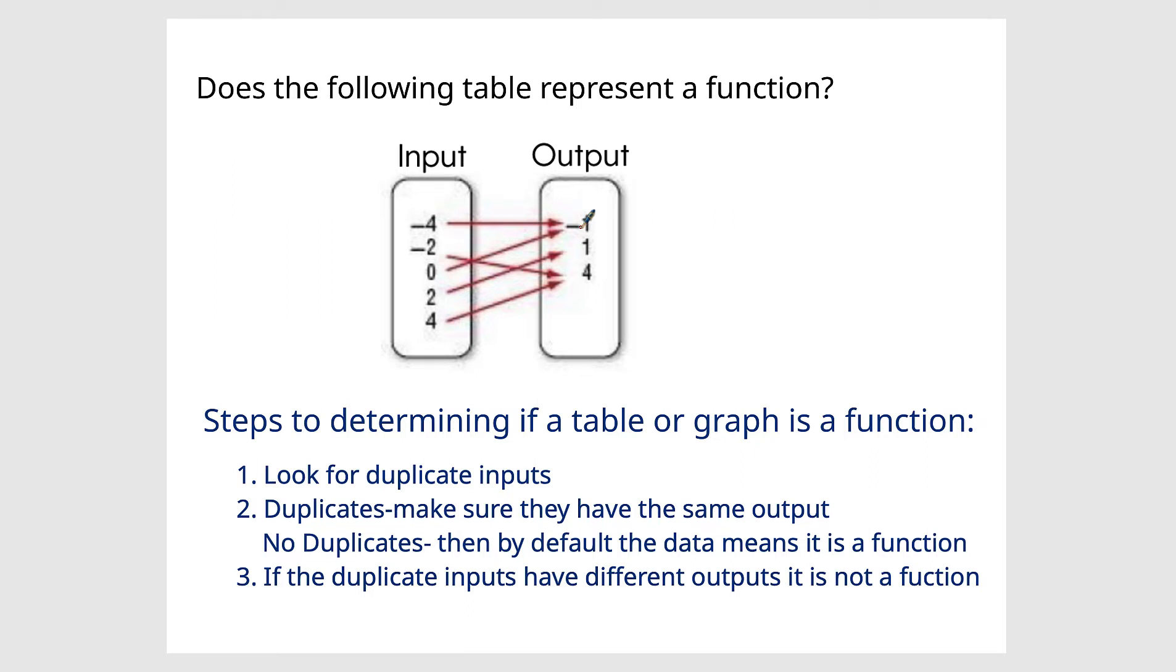That's like two different people being the same age. Same here with four. Two different numbers outputting four. That's okay. This is a function.